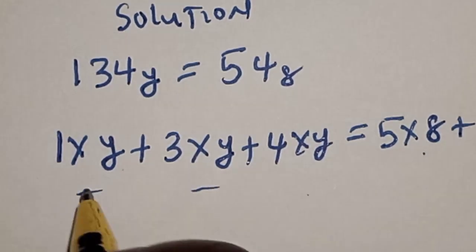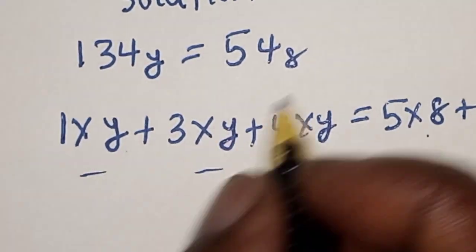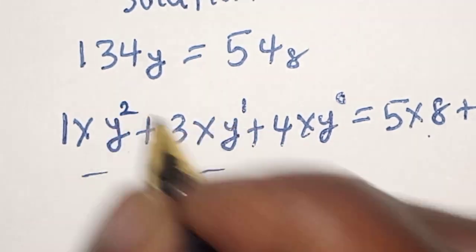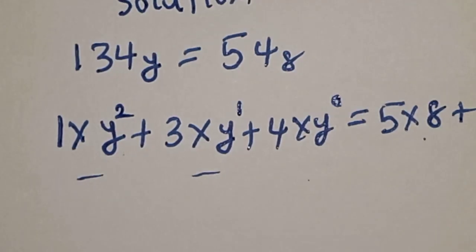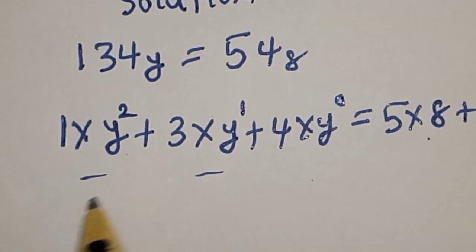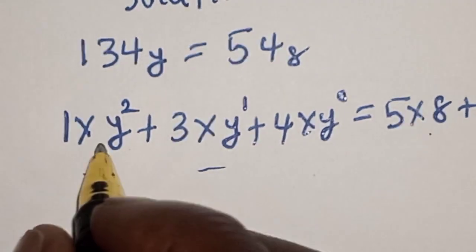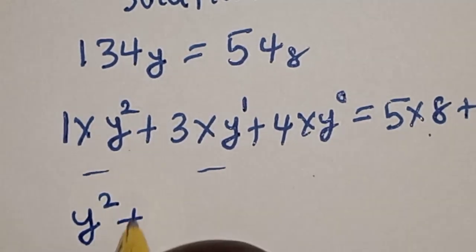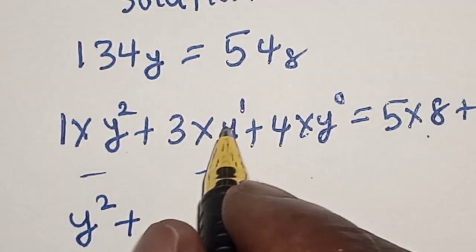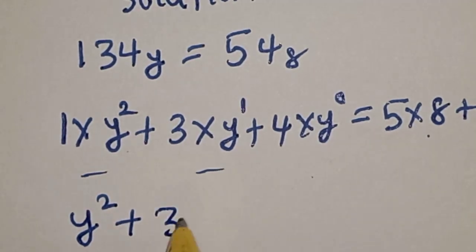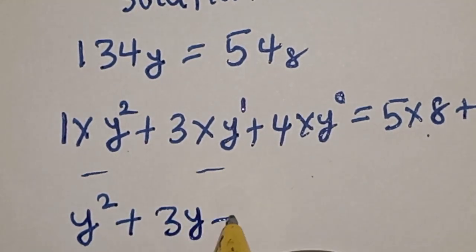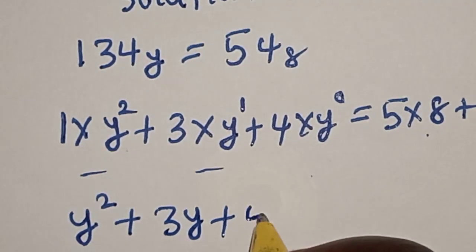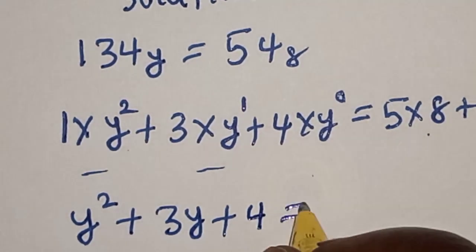We have y raised to the power 0, 1, and 2. This gives us 1 times y squared, which is y squared, plus 3 times y raised to the power 1, which is 3y, plus 4 times y raised to the power 0, which is 1, giving 4. So the left-hand side is y squared plus 3y plus 4, equal to...